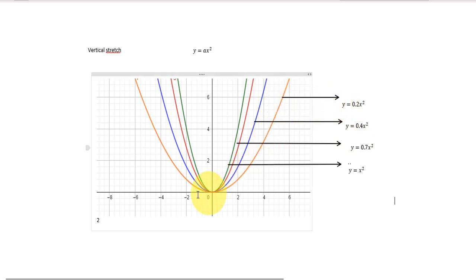When the value of a is less than 1, the parabola will have a vertical stretch. But be careful, it's going to be less than 1 but not less than 0. So a is greater than 0 but less than 1.